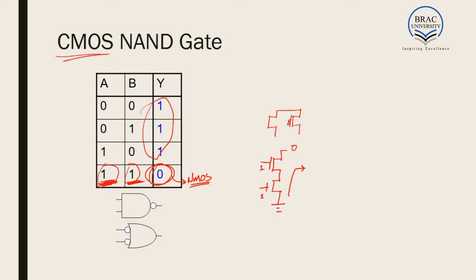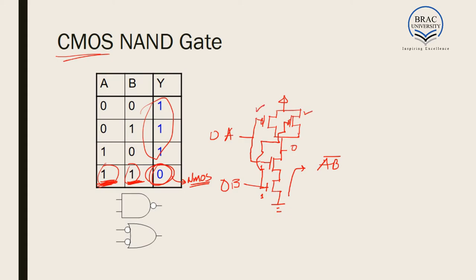Since the pull-down network uses NMOS, the pull-up network will use PMOS. If we connect these two inputs as A and B, we get the relation AB-bar. For the zero-zero condition, both PMOS are on, so output equals one. For zero-one, this PMOS is on and the other is off, so current can flow and output still remains one. For one-zero, one PMOS turns off but the other is on, so current flows and output remains one.